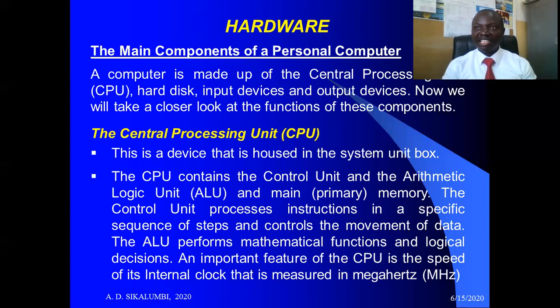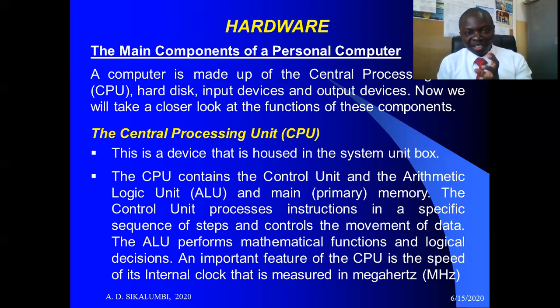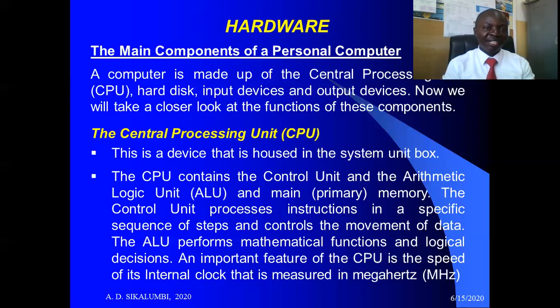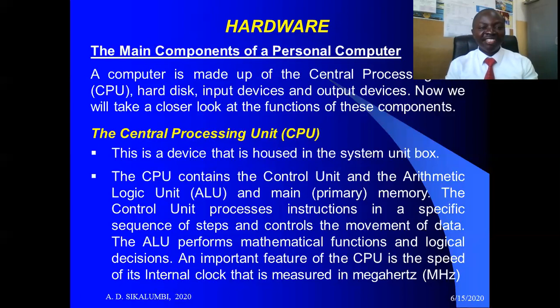The central processing unit has three main components. The first is the ALU — the Arithmetic Logic Unit. Everything done using the computer must have some logical way of presenting information. Arithmetic relates to calculations and computations; for example, using Excel, there are different formulas you can use to compute data. The logic component is where you arrange information — whether in ascending or descending order, alphabetical order, or any other order. That logical way of doing things on the computer is controlled by the ALU, the Arithmetic and Logic Unit.